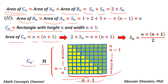Substituting the area of Cn with 2 times Sn, we have 2 times Sn equals n times n plus 1. Dividing both sides by 2, we get Sn equals n times n plus 1 divided by 2.